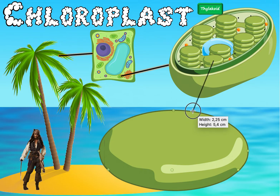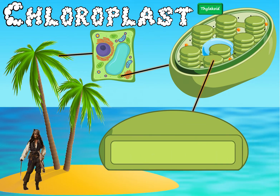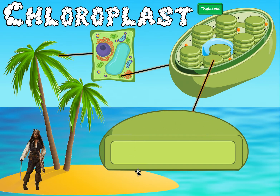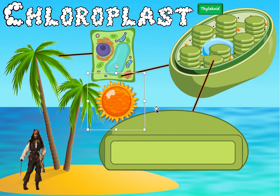When we slice open a thylakoid from the front, we can see it is pretty much empty on the inside and has a membrane. The empty inside is called the thylakoid space, and the surrounding wall is called the thylakoid membrane. The thylakoid is where the first part of photosynthesis happens — the part that depends on sunlight.